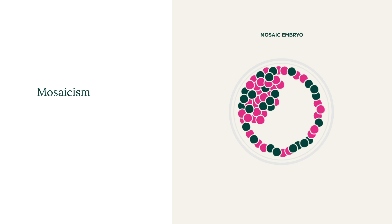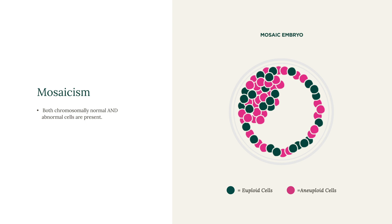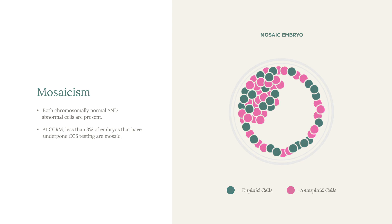Mosaicism is when there is more than one cell line present in the embryo, meaning there is the presence of both chromosomally abnormal and chromosomally normal cells. CCRM has some of the lowest mosaicism rates in the world — only about 3% of embryos that have undergone CCS testing at CCRM Genetics are mosaic.